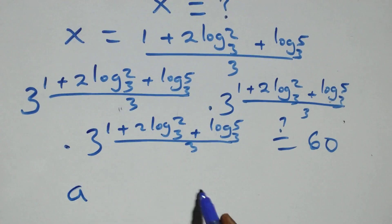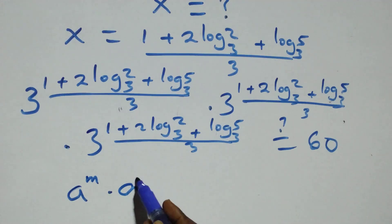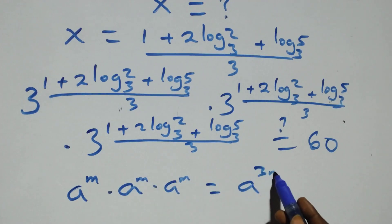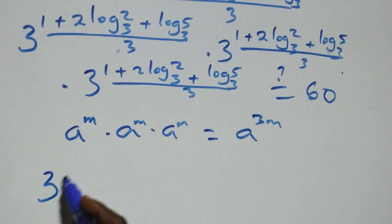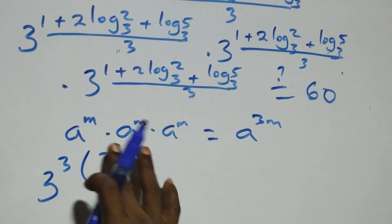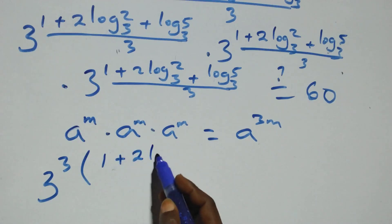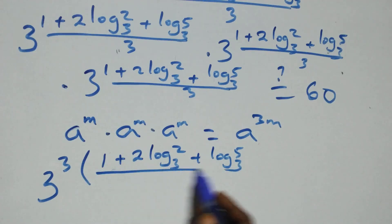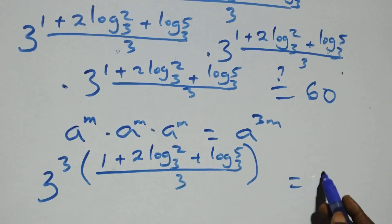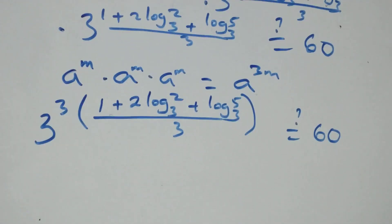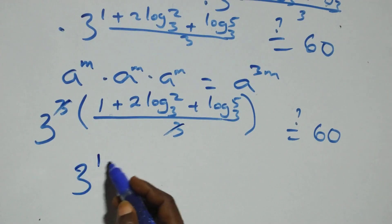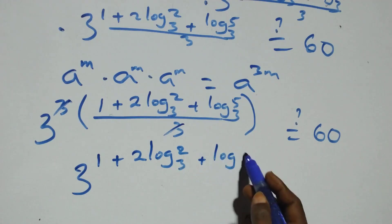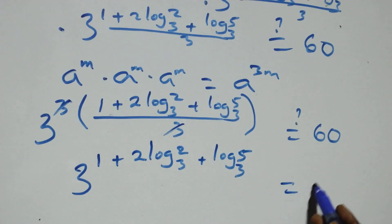This follows the rule: when we have the same base multiplying — a raised to power m, times a raised to power m, times a raised to power m — this can be written as a raised to power 3m. So we can write this as 3 raised to power [3 times (1 plus 2·log₃2 plus log₃5)/3], equals to 60. The 3s cancel each other, and we have 3 raised to power (1 plus 2·log₃2 plus log₃5) equals to 60. Then, since a^(m+n) = a^m × a^n, what we have becomes 3 raised to power 1, times 3 raised to power 2·log₃2, times 3 raised to power log₃5, equals to 60. That is: 3, times 3 raised to power log₃(2²), times 3 raised to power log₃5, equals to 60. This simplifies to 3 times 3 raised to power log₃4, times 3 raised to power log₃5, equals to 60.